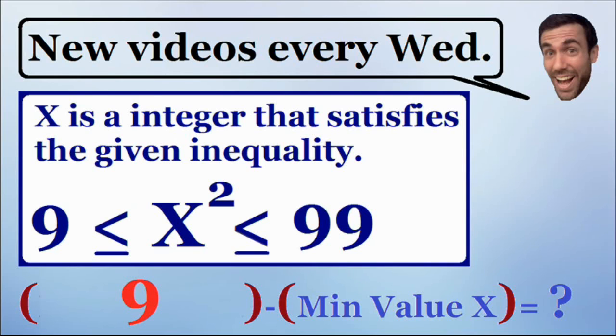Negatives are obviously much smaller than positive numbers, so the minimum value of x would actually be negative 9. Negative 9 certainly satisfies this equation. Negative 9 squared is equal to a positive 81. So our minimum value of x is equal to negative 9.